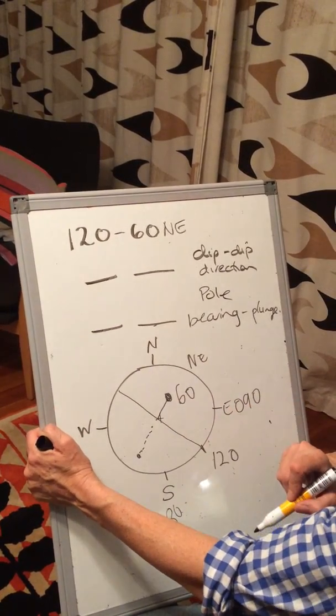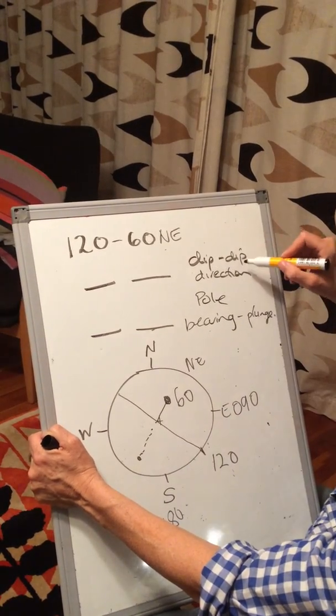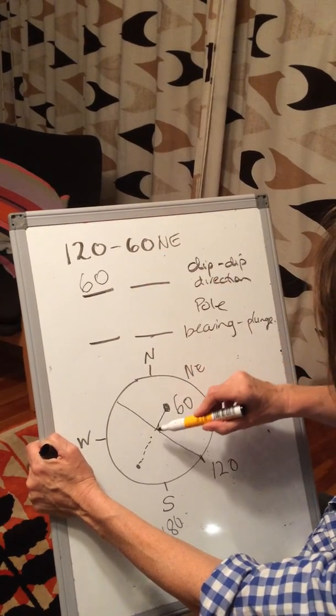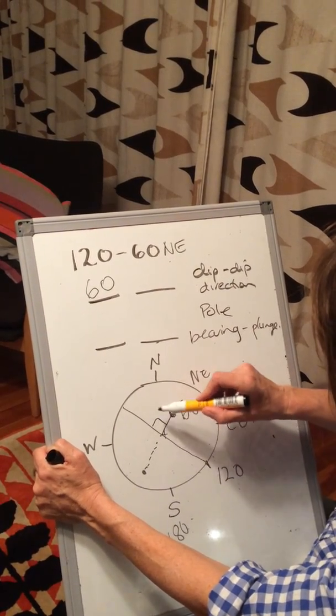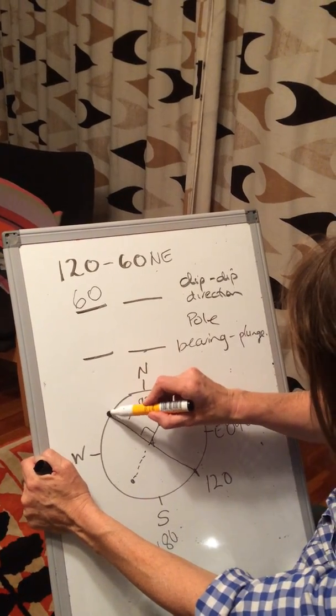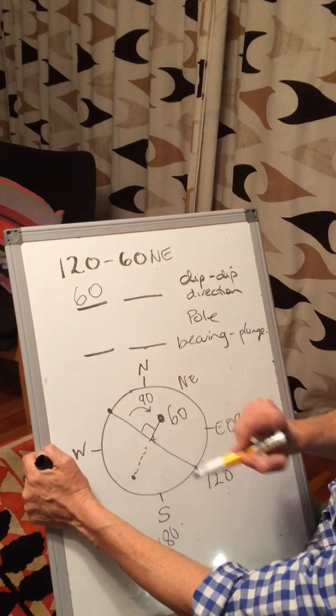Going in this direction. If you want to find the dip in the dip direction, well the dip's easy, it's 60. The dip direction is 90 degrees around from the strike, and that's the strike in that direction.